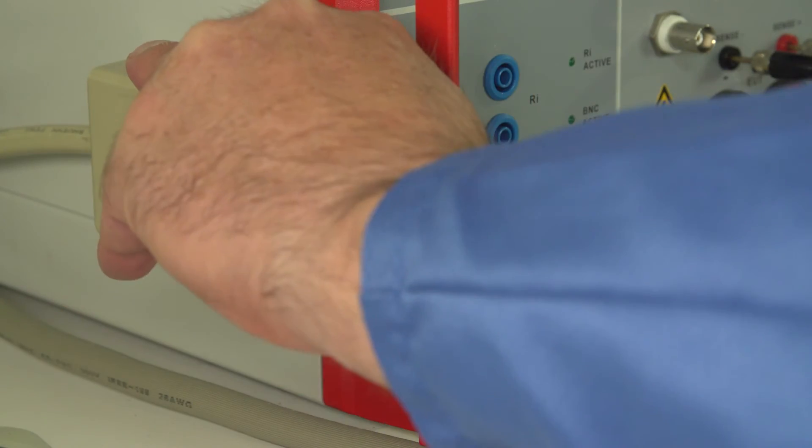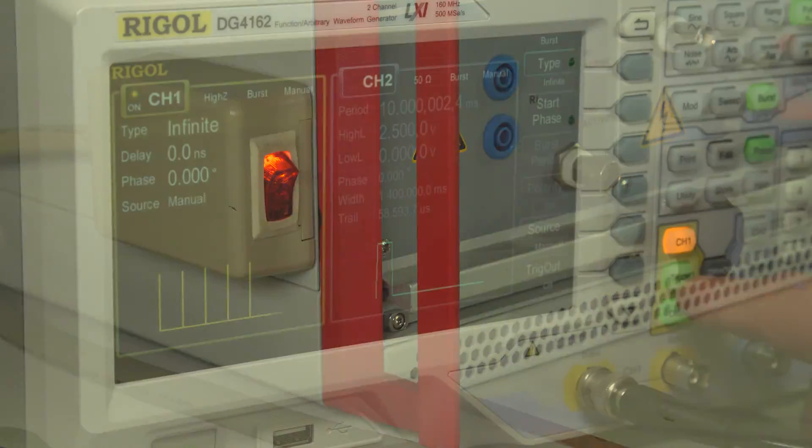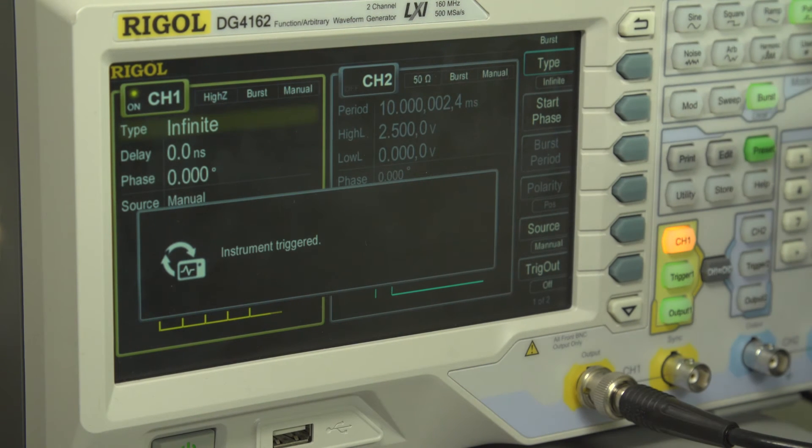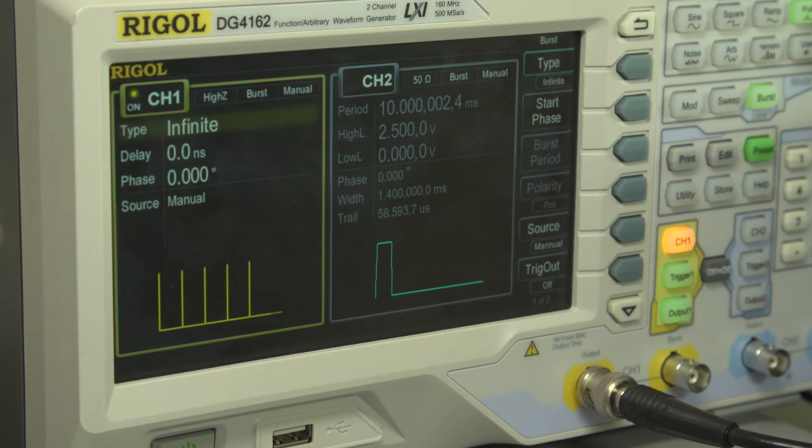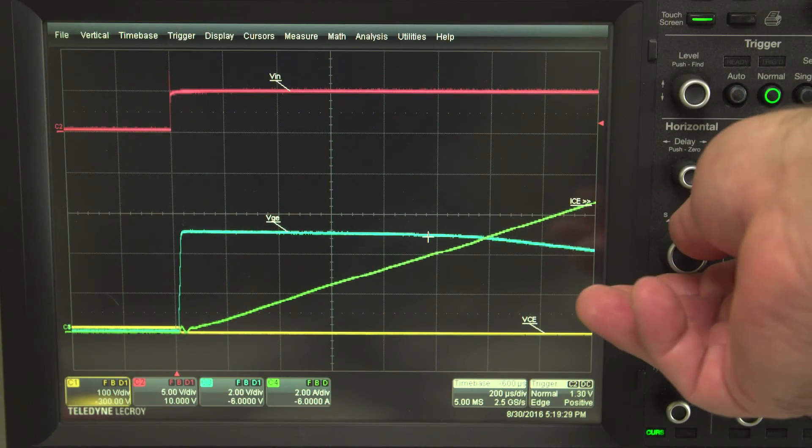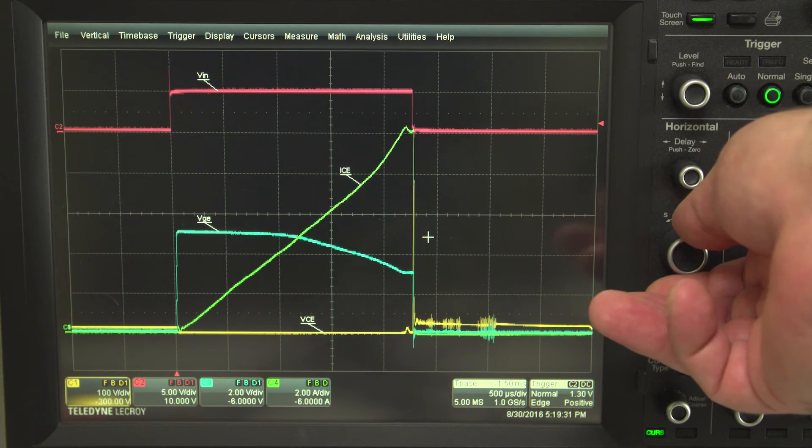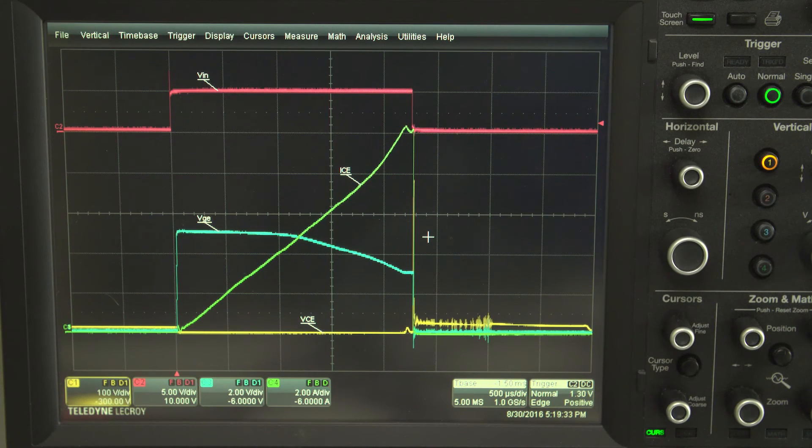Now that the board is connected, we can begin testing and evaluation of the application coil. First we need to turn on the voltage supply or connect the battery. Turn on the signal generator to activate the ignition system. We will start with a pulse width of 2.2 milliseconds and a frequency of 16.7 hertz. Adjust the oscilloscope to capture the ignition waveforms and confirm that the system is operating properly.